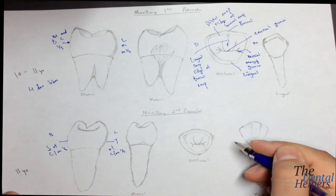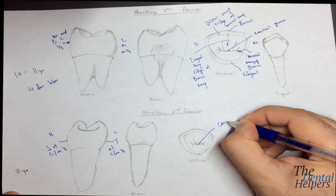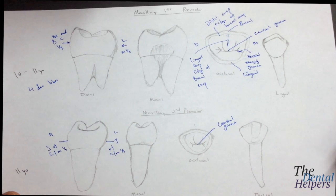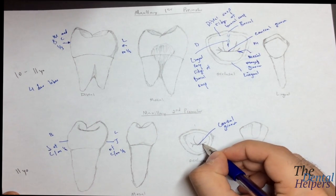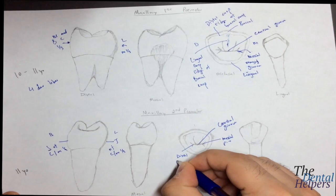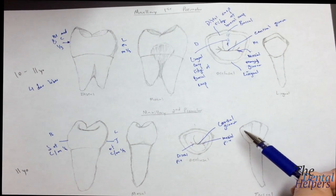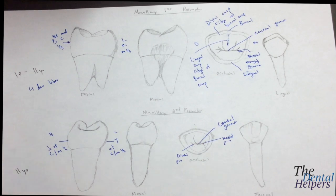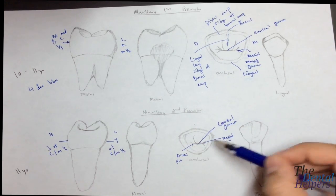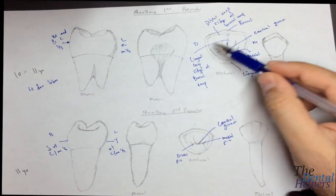Let's label the maxillary second premolar. We have a central groove right here — it's in the center, so it has to be a central groove. We have a mesial pit and a distal pit, and these are supplemental grooves. A way to distinguish the two premolars is that on the second premolar you're going to see these two pits, and there's going to be a difference in the way the overall tooth is shaped.